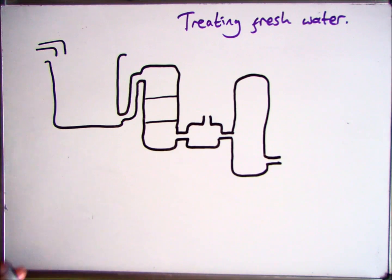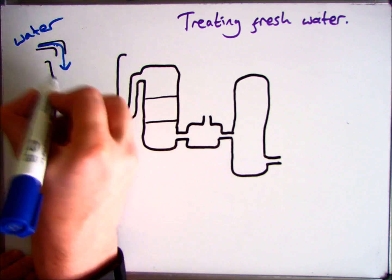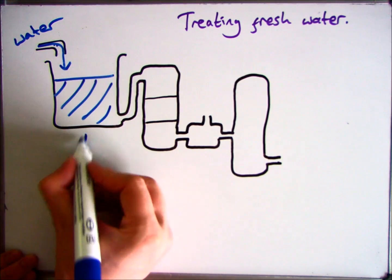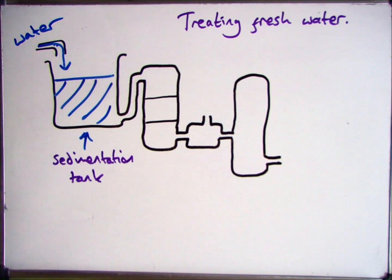There are three major sections to treating fresh water. The first of which is to take your water from your aquifer and put it into a sedimentation tank. In here, all the little bits and pieces will sediment, which means they'll settle on the bottom of the tank.